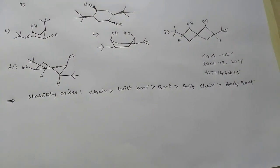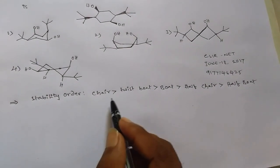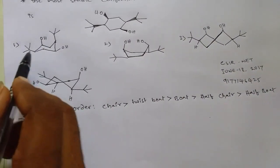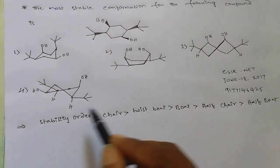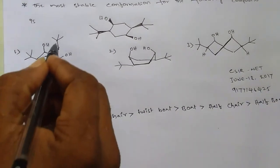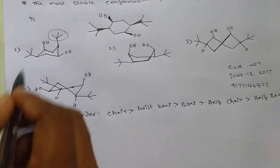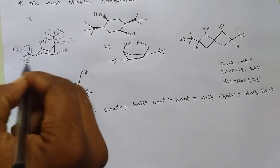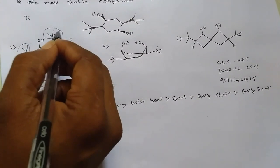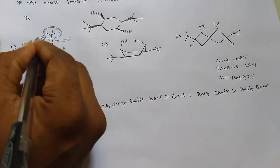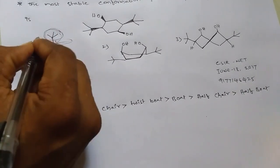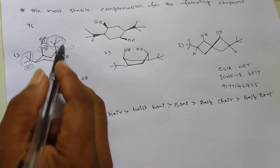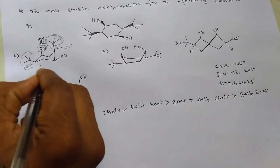Looking at the four options, the first one is the chair form, which should be stable according to our stability order. However, if you observe the bulky tertiary butyl group, it should be in the equatorial position. But here it is in the axial position, and the OH group is also in an axial position. This steric factor destabilizes the chair form, making it less stable.